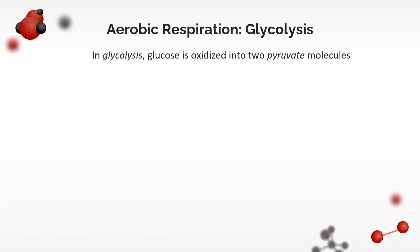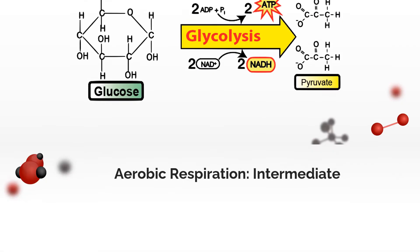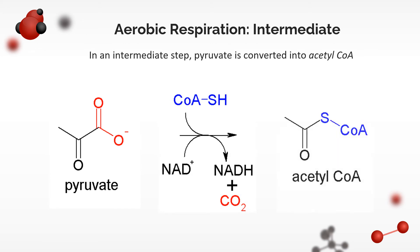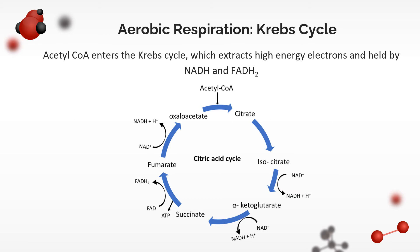In glycolysis, glucose is oxidized into two pyruvate molecules. This produces ATP. This also converts NAD plus to NADH, nicotinamide adenine dinucleotide hydrogen. In an intermediate step, pyruvate is converted into acetyl coenzyme A. This involves the use of NAD plus and the production of CO2 gas. In the Krebs cycle, acetyl coenzyme A is oxidized, extracting high-energy electrons that shall be held by NADH and FADH2, flavin adenine dinucleotide hydrogen.